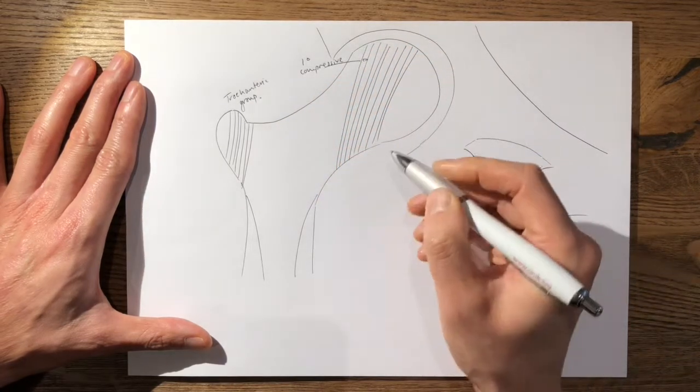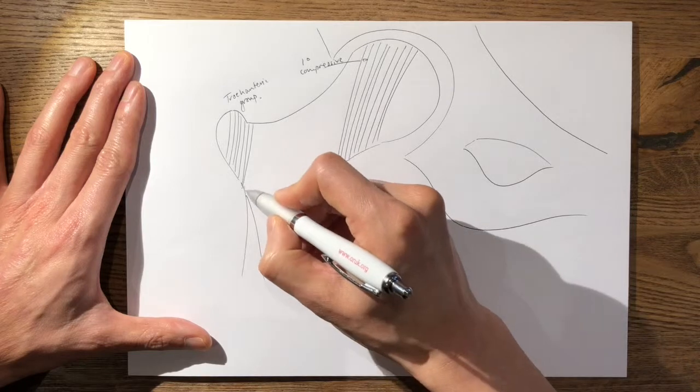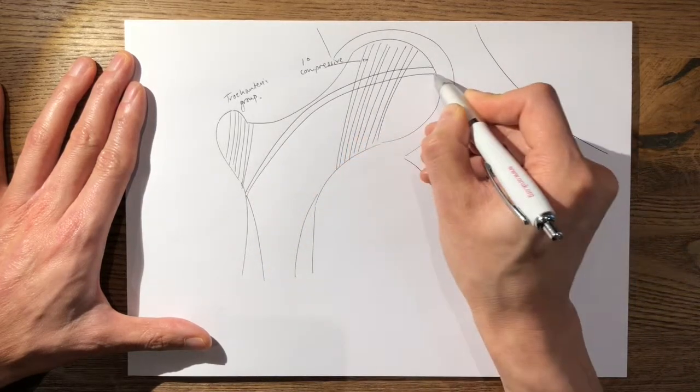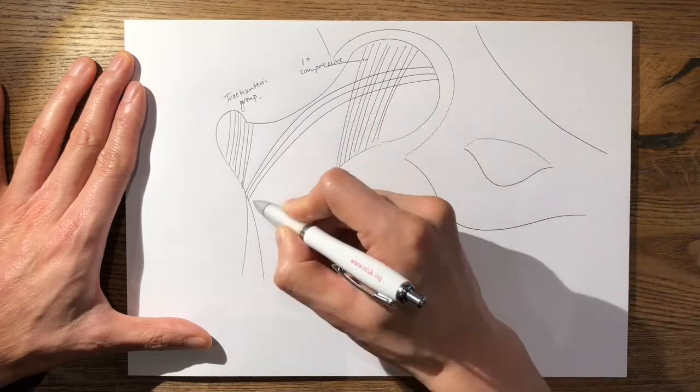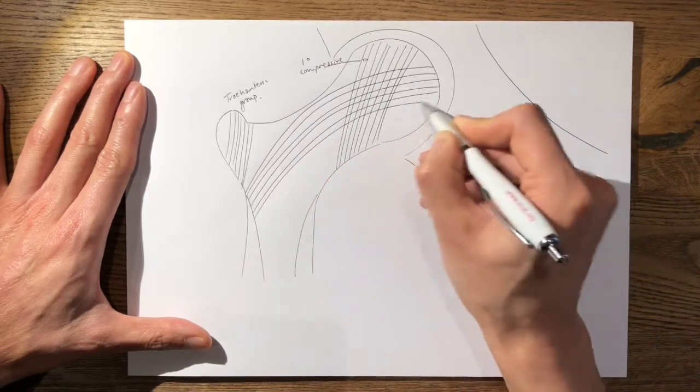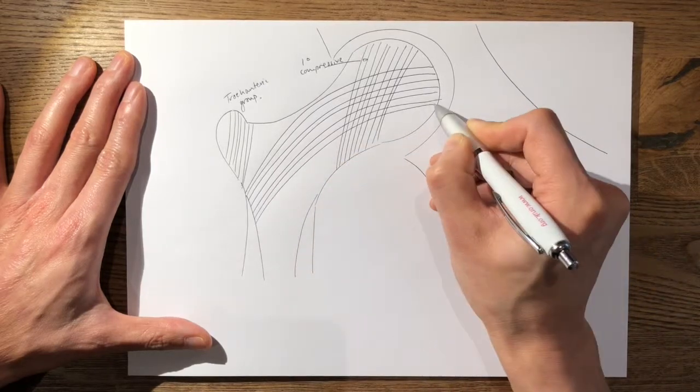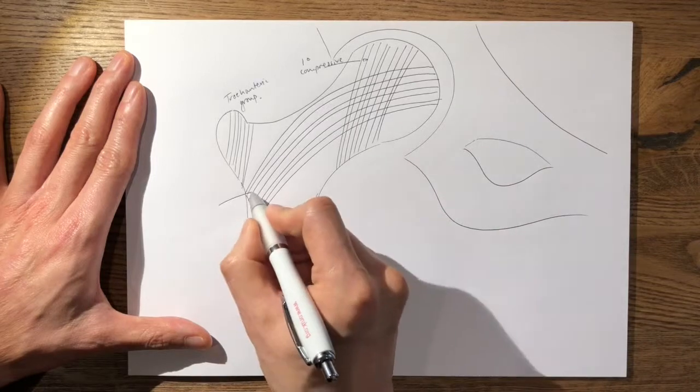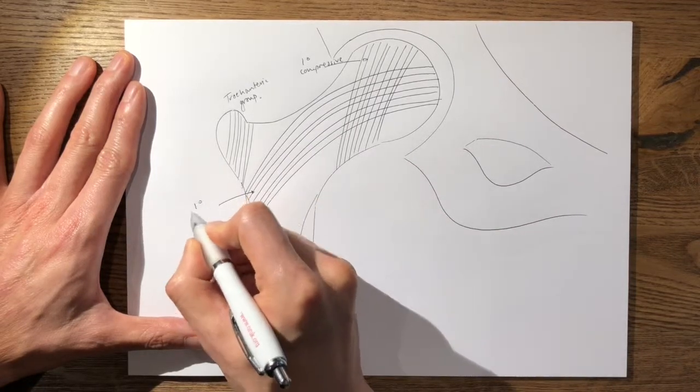Now your primary tensile group starts from here and arcs across like this. And you can see how they tend to resist tensile and compressive loads placed upon it. So this is your primary tensile group.